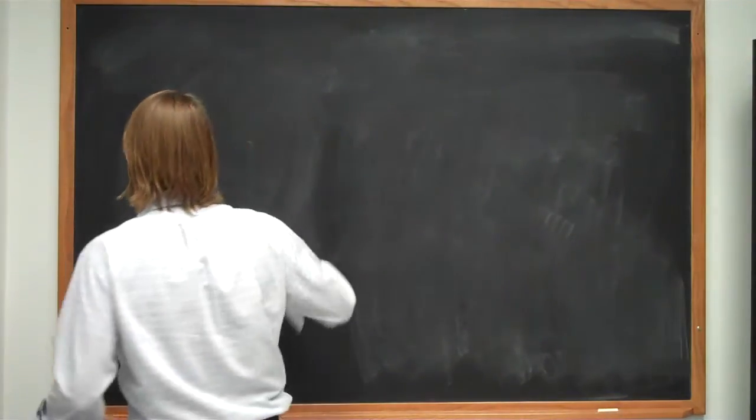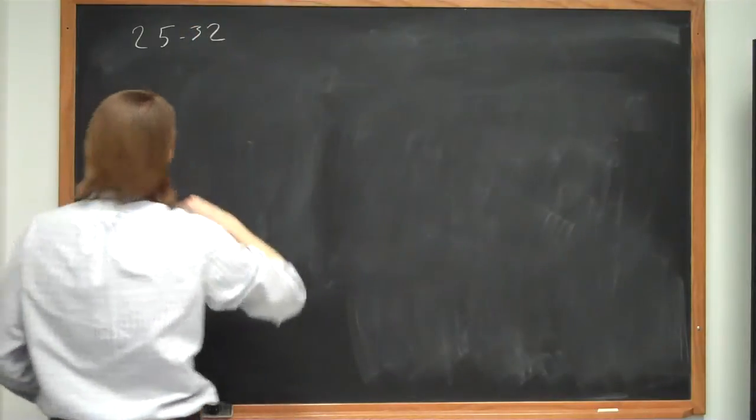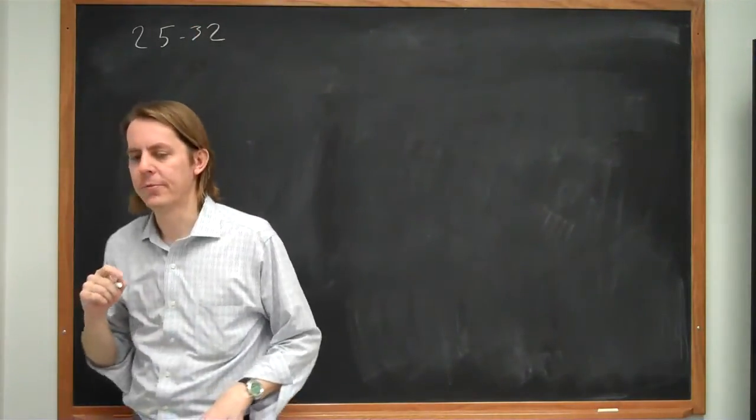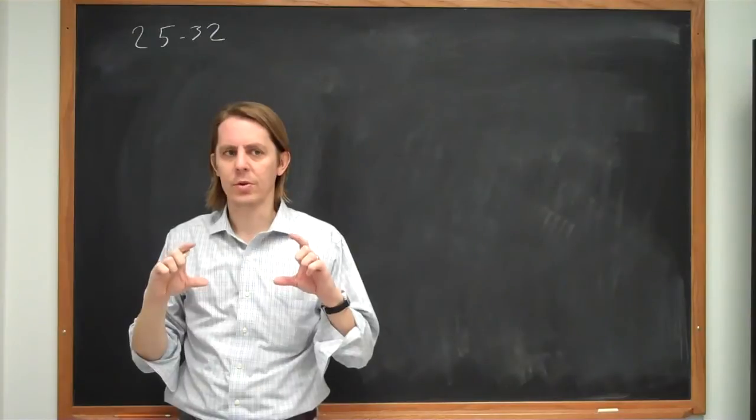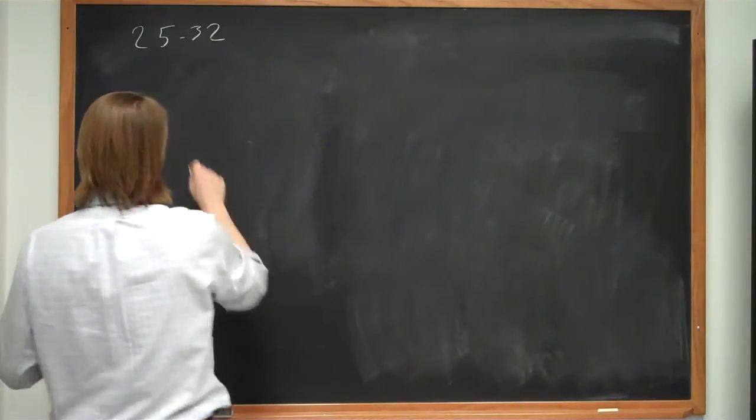This is 2532. And what it says is you have four charges on the corners of a square, each of mass m and charge q. So let's first draw that.